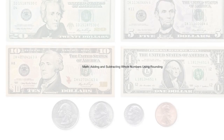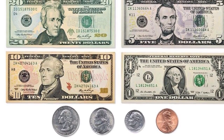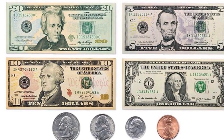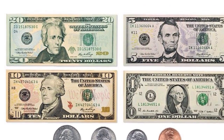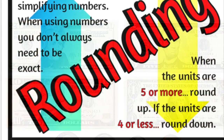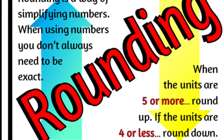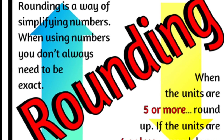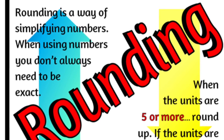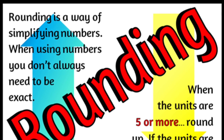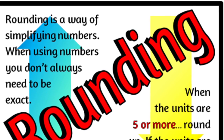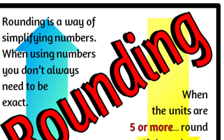My curricular unit was on math — adding and subtracting whole numbers using rounding. This unit is geared towards second-grade students. I designed it to teach students to use different combinations of coins and bills to solve math problems. Students will add and subtract using estimations to find totals, and will also use rounding to add and subtract. They will perform this lesson with the use of many different technological tools to assist them in their learning on a daily basis.